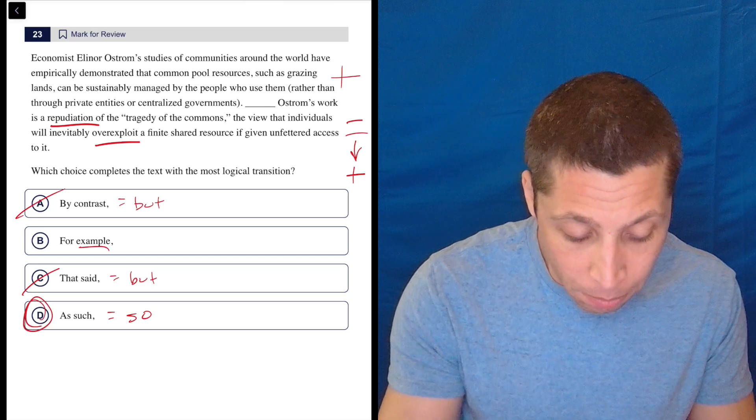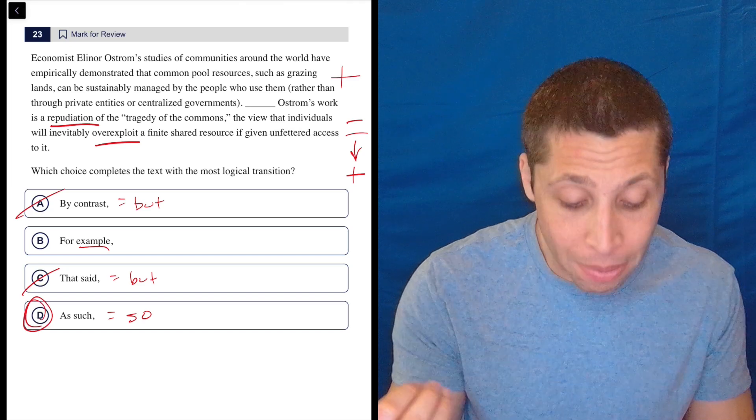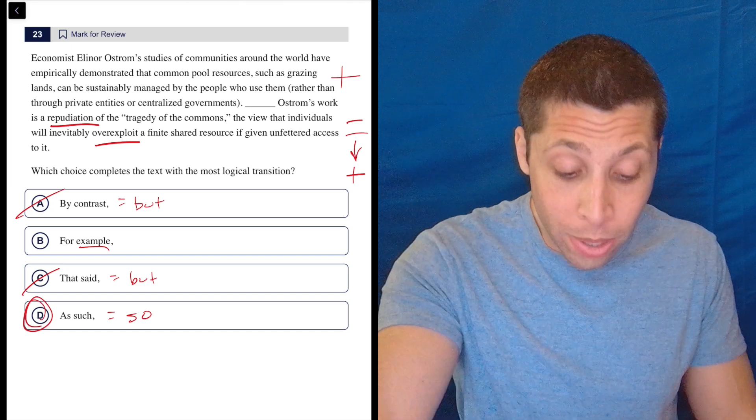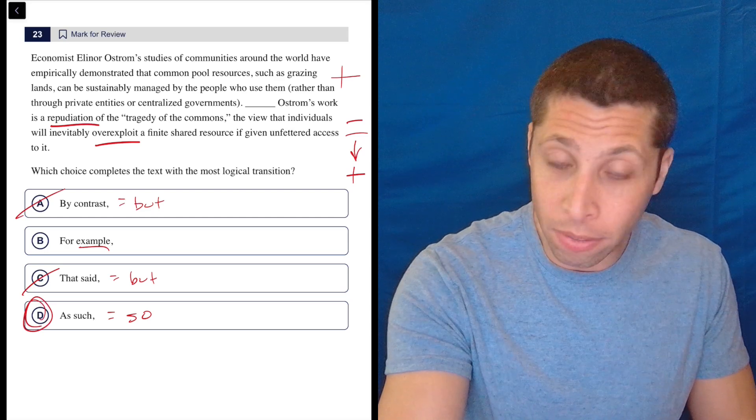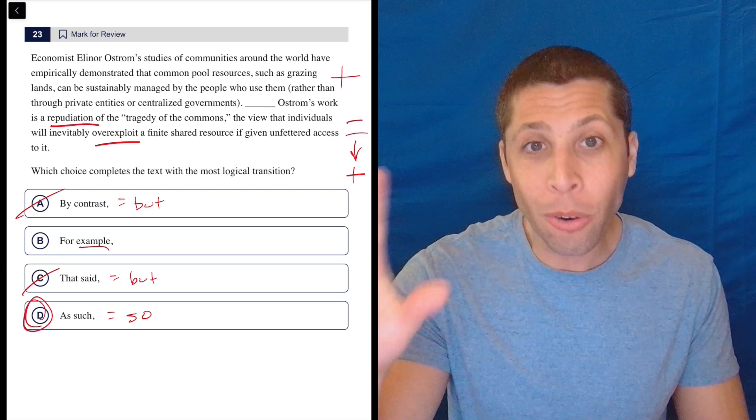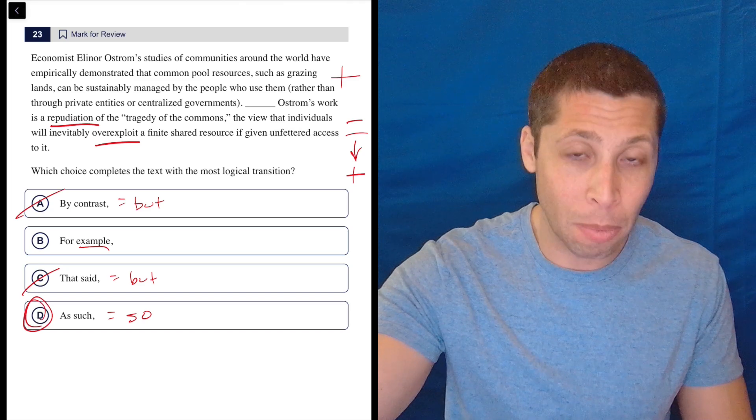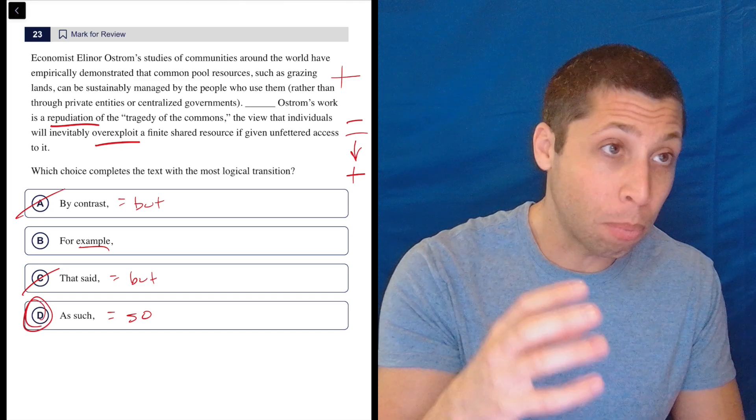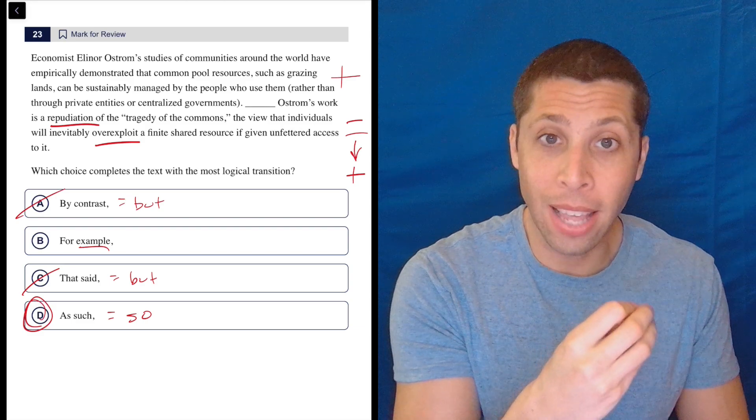And the word so really does fit here nicely. She demonstrated that common pool resources can be sustainably managed. So she has repudiated this tragedy of the commons idea, which says that people are going to overexploit things. So she's done work to show that things can be shared. So that's repudiating, refuting, proving wrong the idea that they can't be shared.